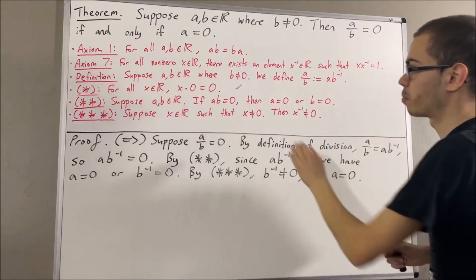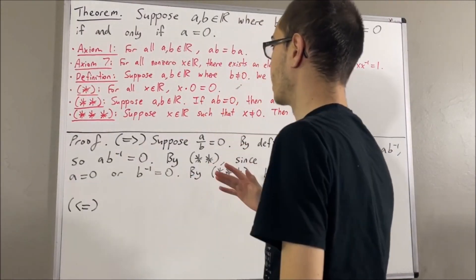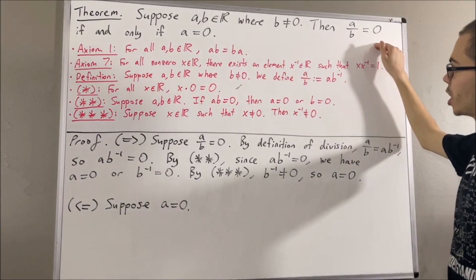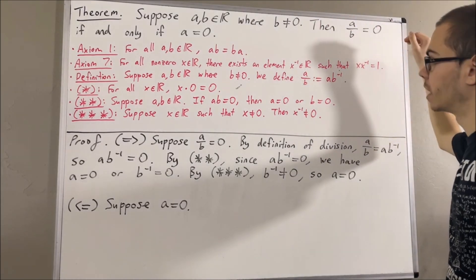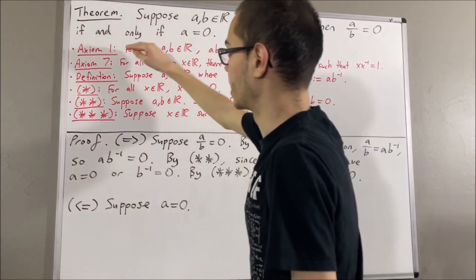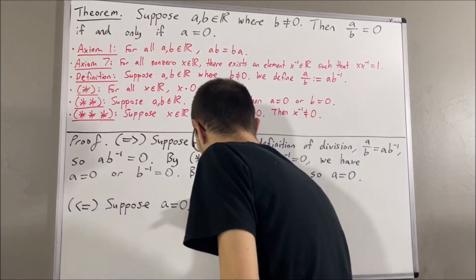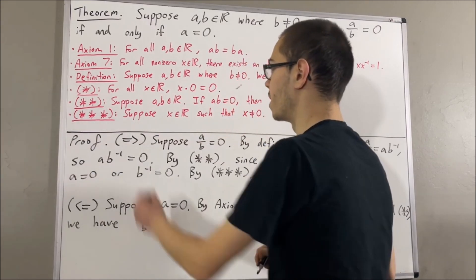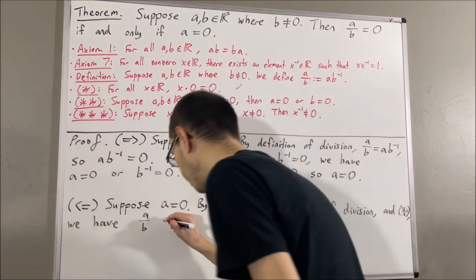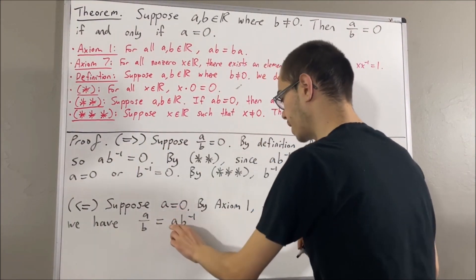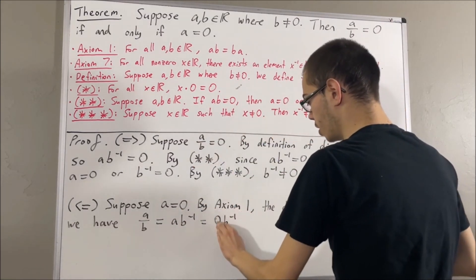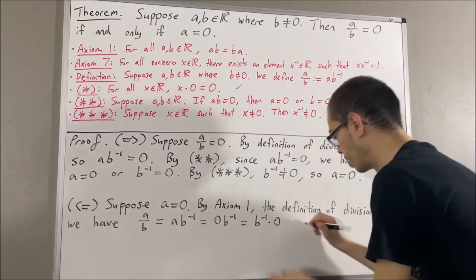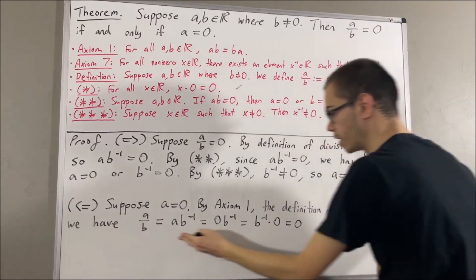Now, let's prove the other direction: if a is equal to 0, then a over b is equal to 0. Suppose a is equal to 0. The whole goal is to show that a over b is equal to 0, and we're going to show this through a chain of equalities, applying axiom 1, the definition of division, and the result that x times 0 is equal to 0. By the definition of division, a over b is equal to a times the reciprocal of b. Since a is equal to 0, we replace a with 0. By axiom 1, 0 times the reciprocal of b equals the reciprocal of b times 0, which equals 0. So through this chain of equalities, we have shown that a over b is equal to 0.